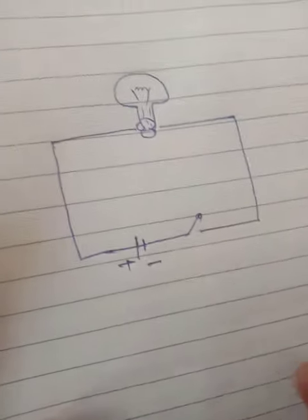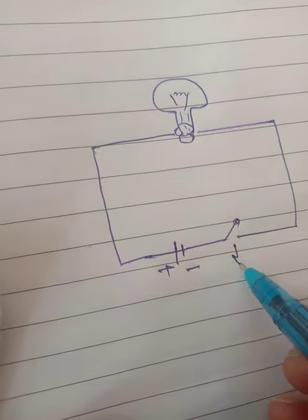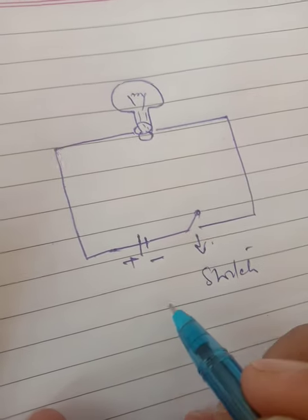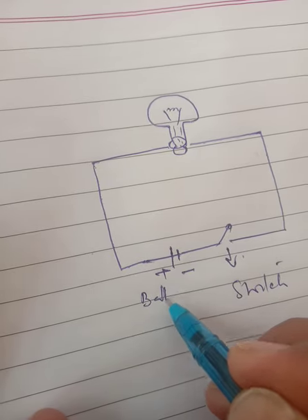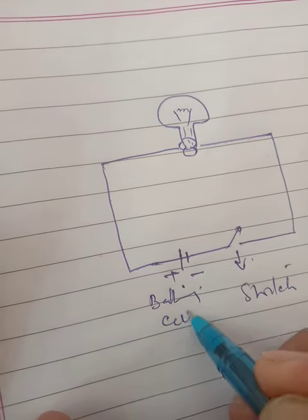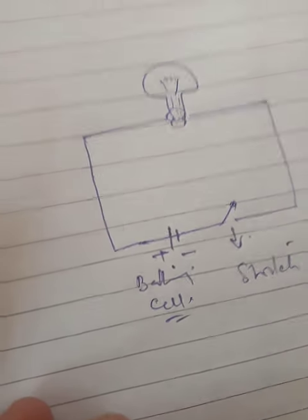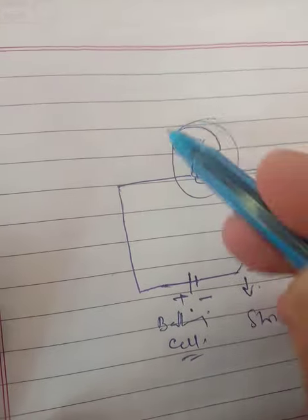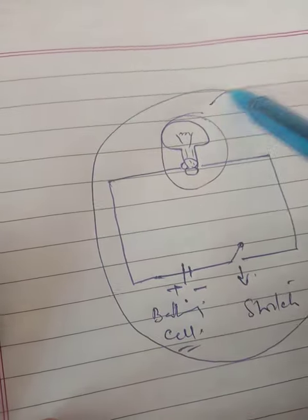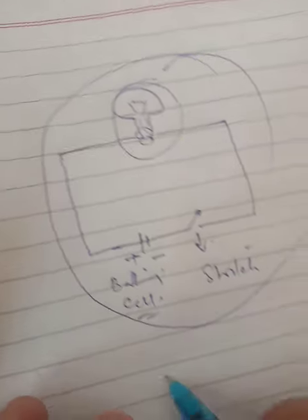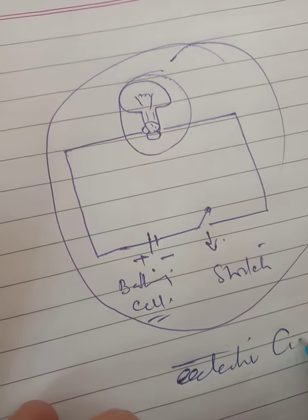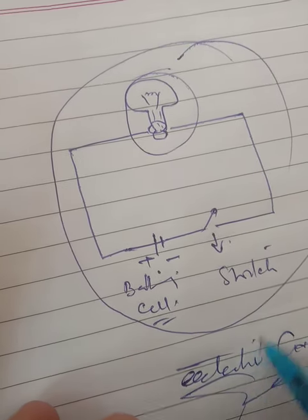These are some symbols. This is the symbol for switch. This is the symbol for battery, or we can say cell. And this is the symbol for bulb, which is a simple representation of an electric circuit.